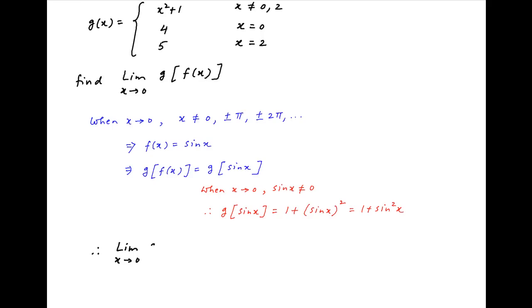Therefore, the desired limit as x tends to 0 of g of f(x) is equal to the limit as x tends to 0 of 1 plus sin square x. Sin x tends to 0 as x tends to 0 and therefore, the value of this limit is equal to 1.